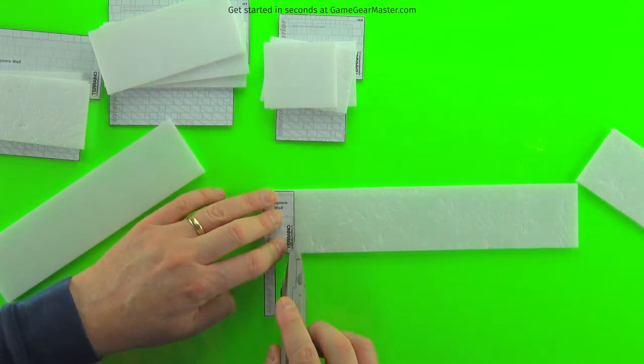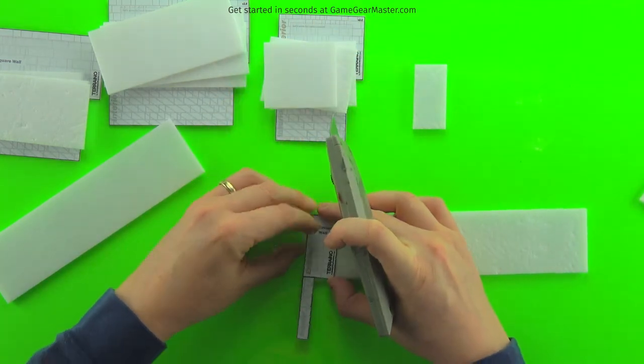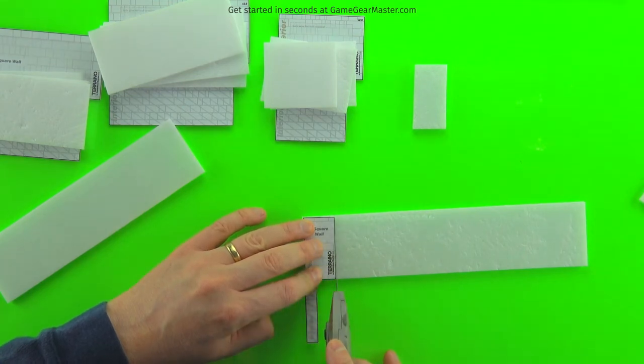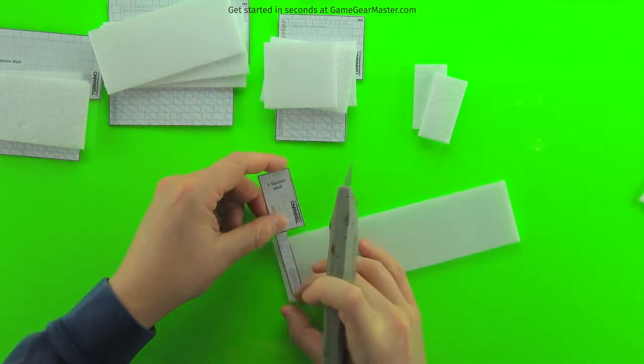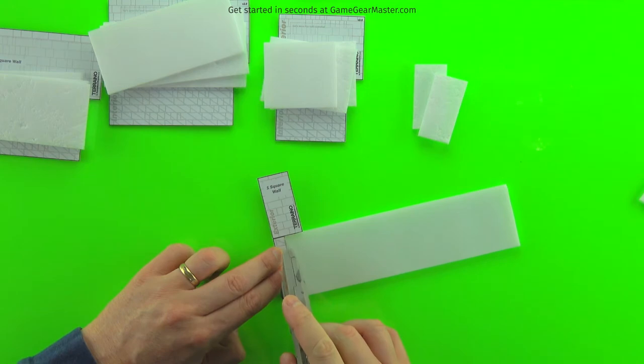And I'm just scoring along the edge of the template and then snapping off the pieces that I need. And on this small one square wide wall, please be careful when cutting that interior piece. There's not a lot of things to hold on to there just because it is such a narrow little piece. So please watch your fingers.